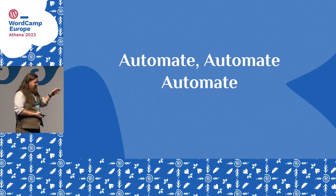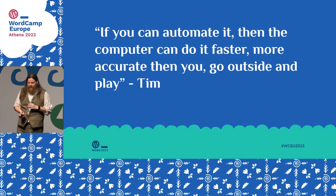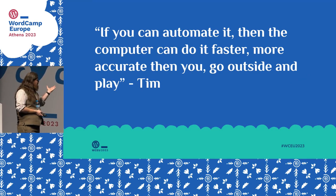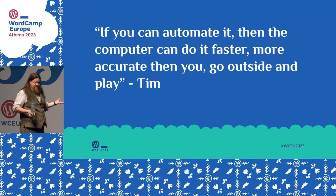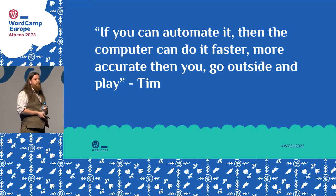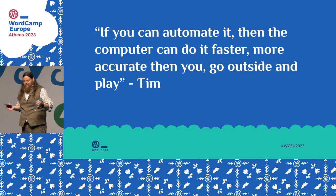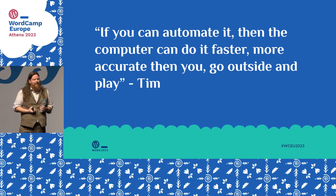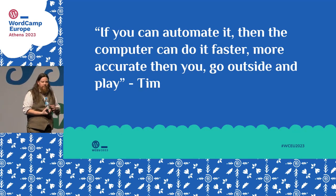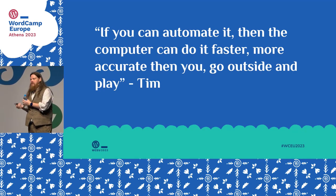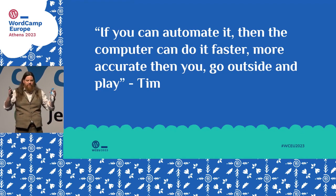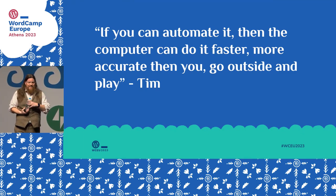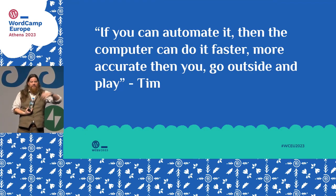If you can, any test, any standard, any specification — anything we can do to automate will be better. I believe that if you can automate it, the computer will do it faster and more accurately than you, and you can go outside and play. If we can automate as much as possible, then we're left with the chunk that only we can do. We as humans are good at communicating and thinking outside of very structured things — that's how we find and solve problems. A computer system can't yet do a full code review.